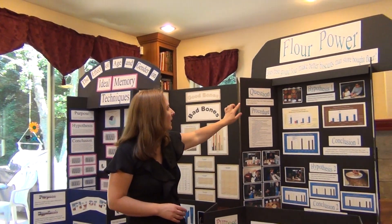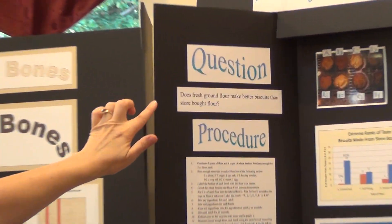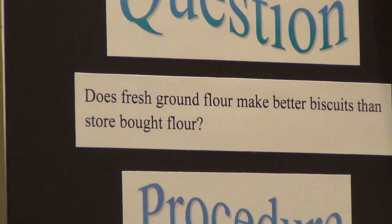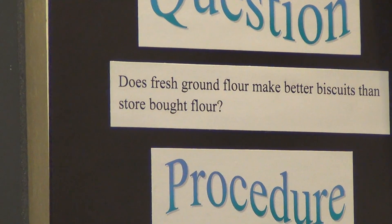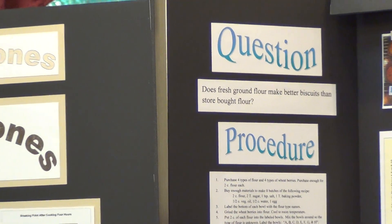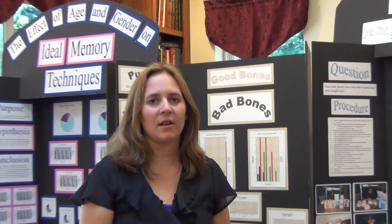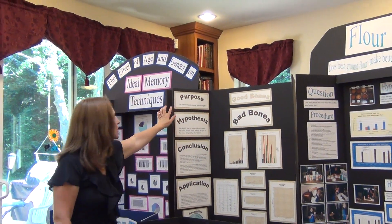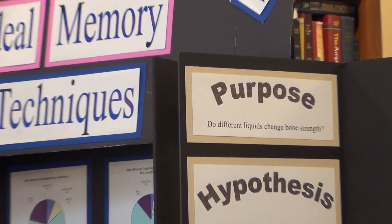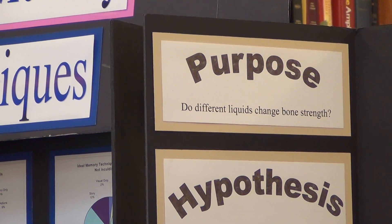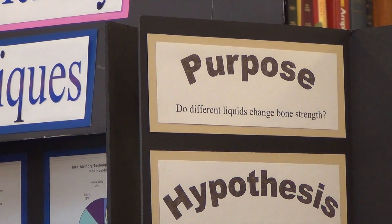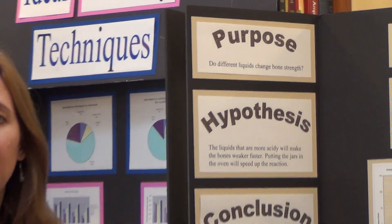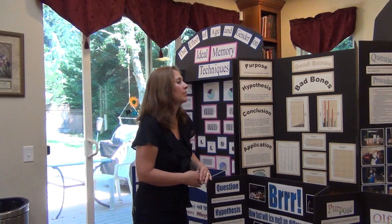I'm going to give you a few examples, and then we're going to talk about the different categories of questions. The first example question was: does fresh ground flour make better biscuits than store-bought flour? That's a harder one to measure, but we'll talk about that project later in the series. The next one is: do different liquids change bone strength? She measured bone strength by how far she could bend it, by degrees — so that was measurable.